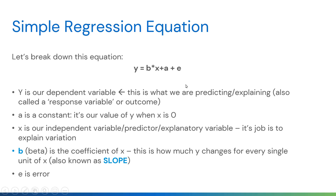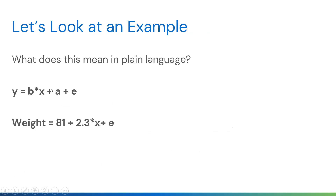E is the error term — standard error — and accounting for error is very important; it should always be included in the equation. As an example using height and weight: weight is y, and x could be height, or it could be a drug, a program, or a policy like implementing sidewalks in a community. With an alpha of 81 and a beta of 2.3, that's how the equation applies in a real-world scenario.